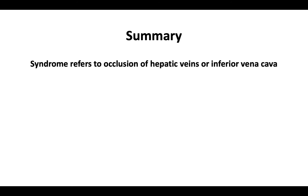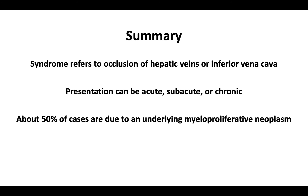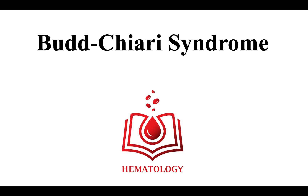In summary, the Budd-Chiari syndrome refers to occlusion of the hepatic veins or the hepatic portion of the inferior vena cava. Presentation can be acute, but in the majority of patients will be subacute or chronic. About 50% of cases will be due to an underlying myeloproliferative neoplasm. This ends our video on the Budd-Chiari syndrome, an unusual thrombotic disorder involving thrombosis of the hepatic veins.